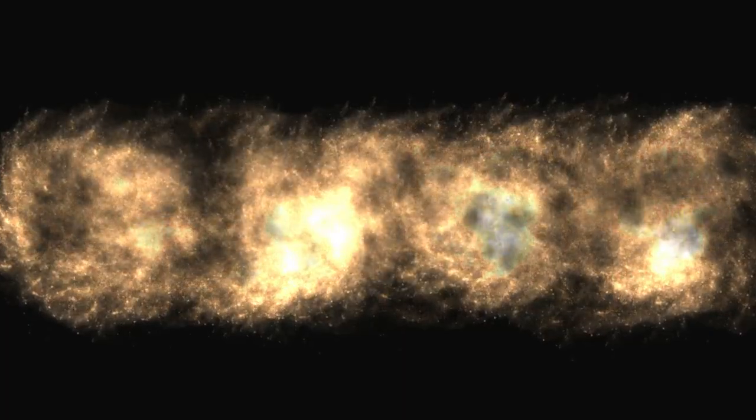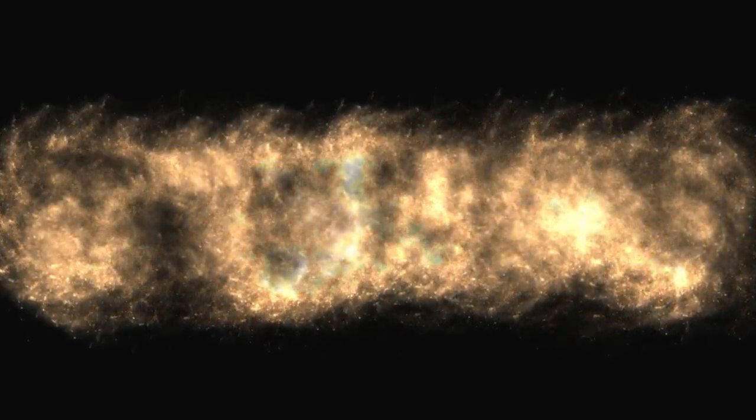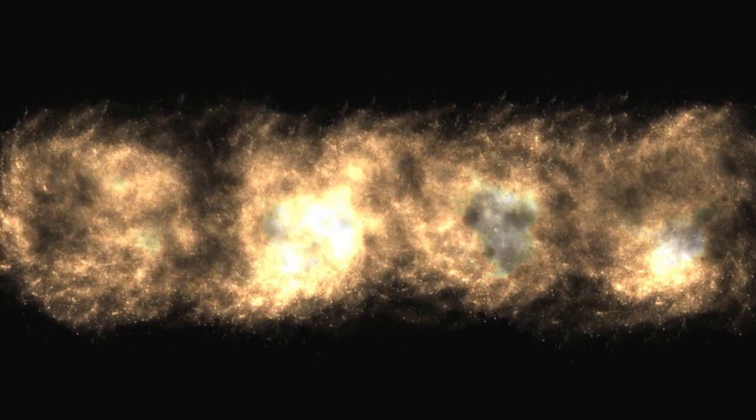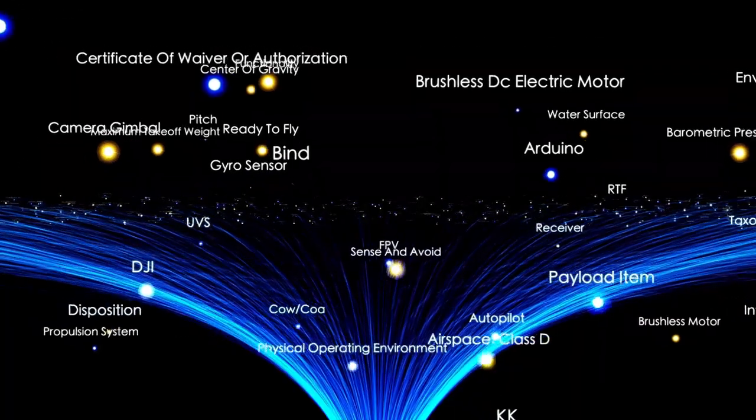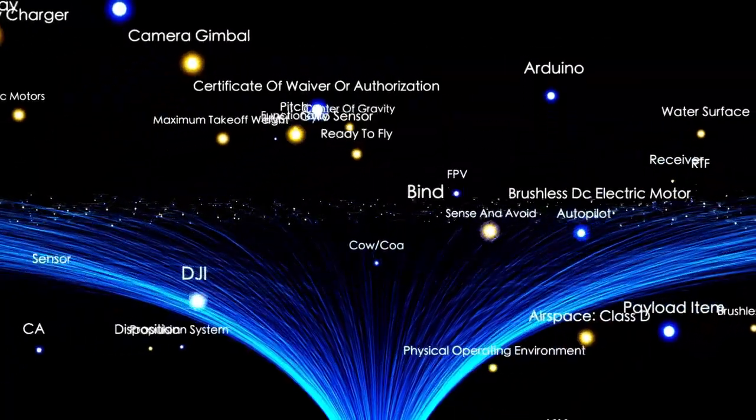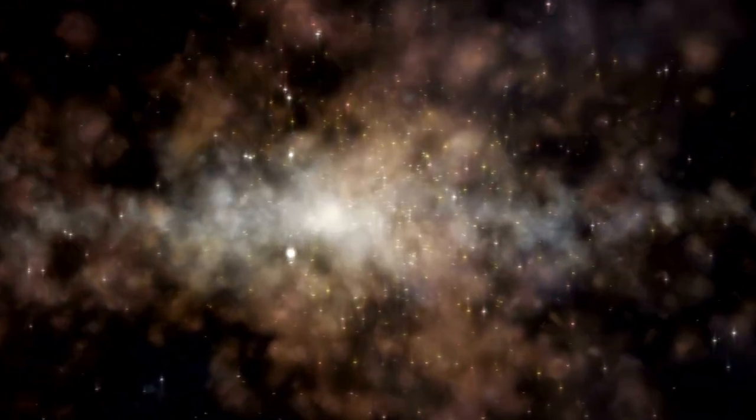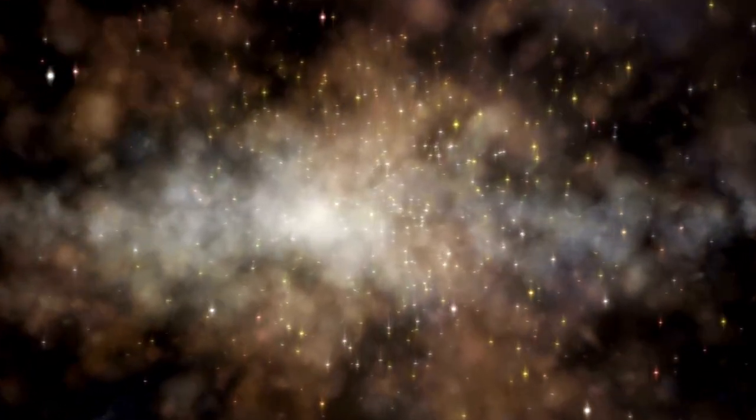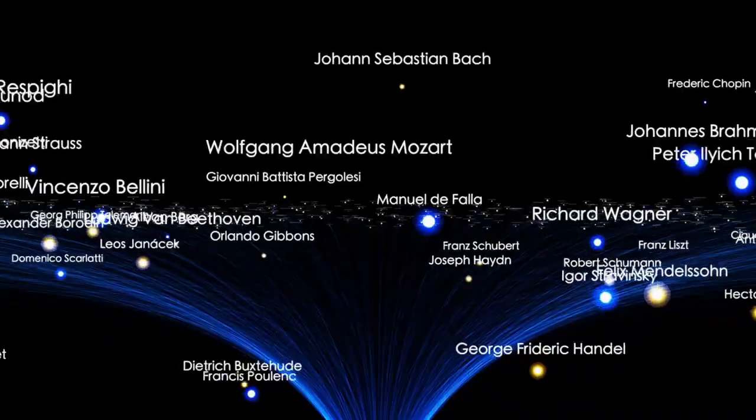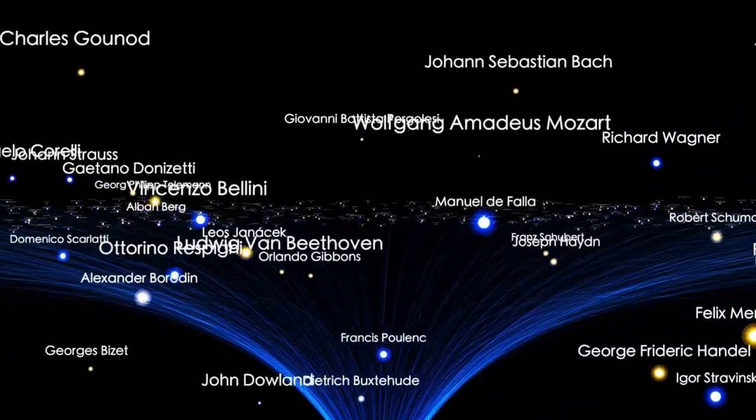Scientists estimate that the diameter of the observable universe is about 93 billion light years. That may seem surprising when compared to the estimated age of the universe, which is around 13.8 billion years. One might wonder how the observable universe can be larger than the age of the universe in light years. The answer lies in the fact that the universe has been expanding ever since the Big Bang.